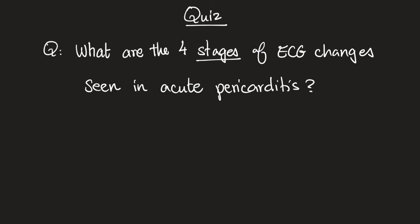Quiz time: What are the four stages of changes on EKG seen in a patient with acute pericarditis? By time — what happens earlier, and then later, and then after that?